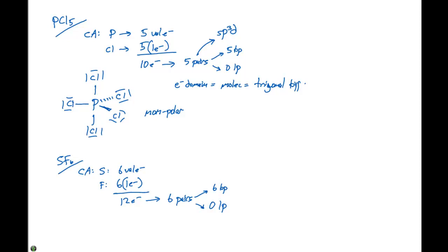If we have six pairs, that means we have to expand beyond an octet. So we're going to have an SP3D2 hybridization around the central atom.